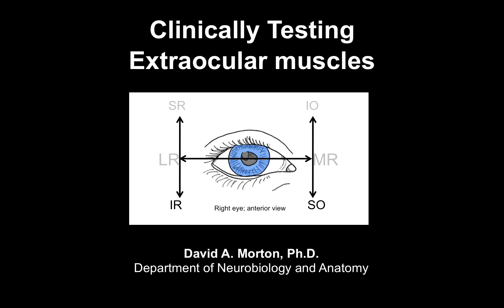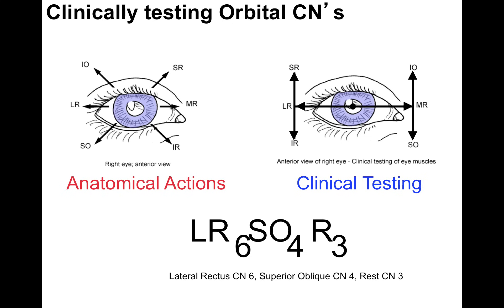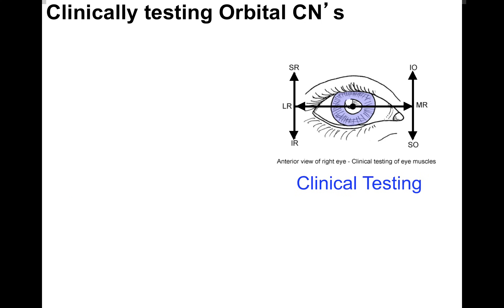We're now going to talk about clinically testing the extraocular muscles. This picture shows the anatomical actions on the left of the screen and the clinical testing of the muscles on the right side of the screen. What is the difference? That's the purpose of this tutorial.